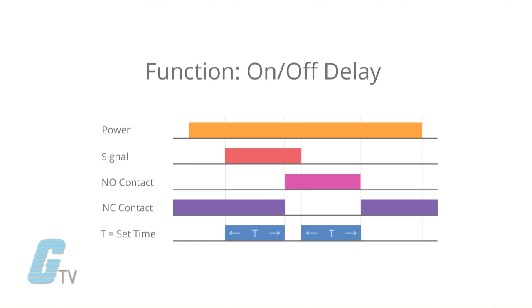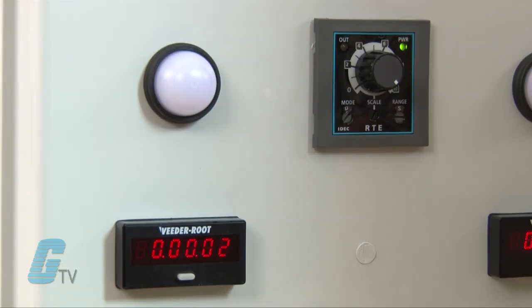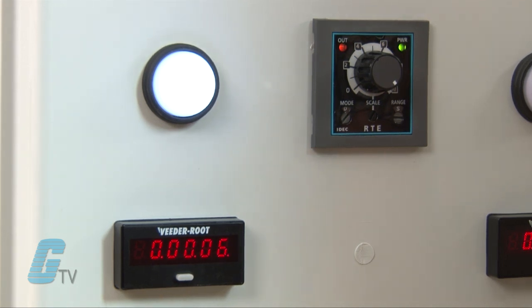This timing function can change from device to device, but generally starts with an on delay function when the signal is applied. If the signal is a momentary signal, it can be set up to begin timing when the signal is supplied and then set to an off delay when the signal is applied again. Maintained operation signal starts may have the on delay function start and then trigger the off delay function when the signal is no longer applied.